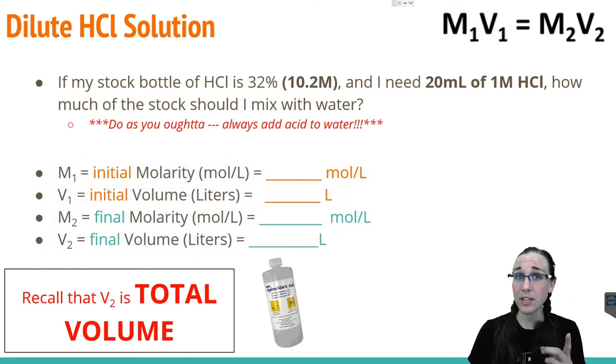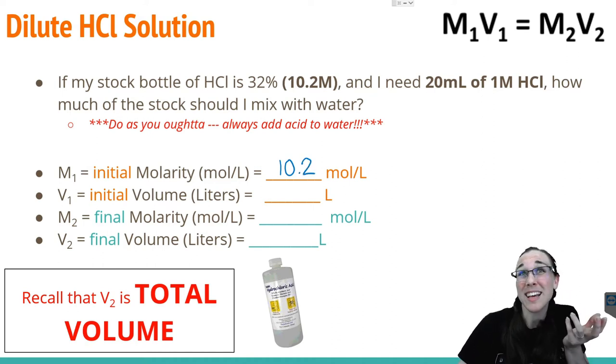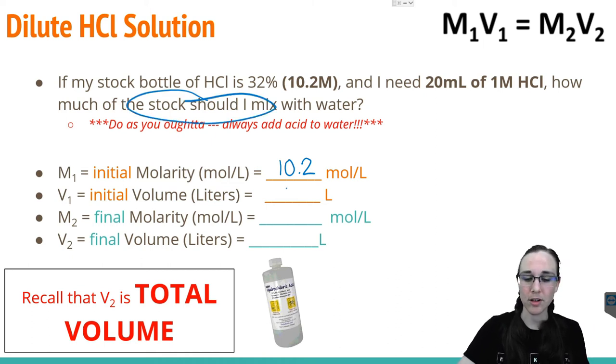And please keep in mind that your V2 is actually your total volume. It's your water and your chemical together. So let's first pick out all of the information we have. We know that our initial molarity is 10.2 moles per liter. We know our initial volume is what? That's what we're solving for. How much of the stock should I mix with water? So that's our big question mark of the day. We know we're trying to make a one molar solution, so we're going to put a one in front of our M2 variable. And we know that we need 20 milliliters as our final volume.